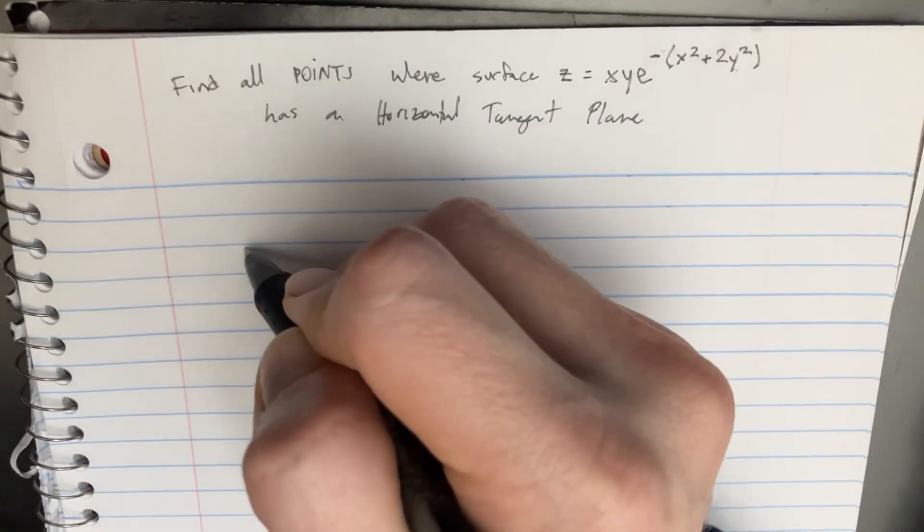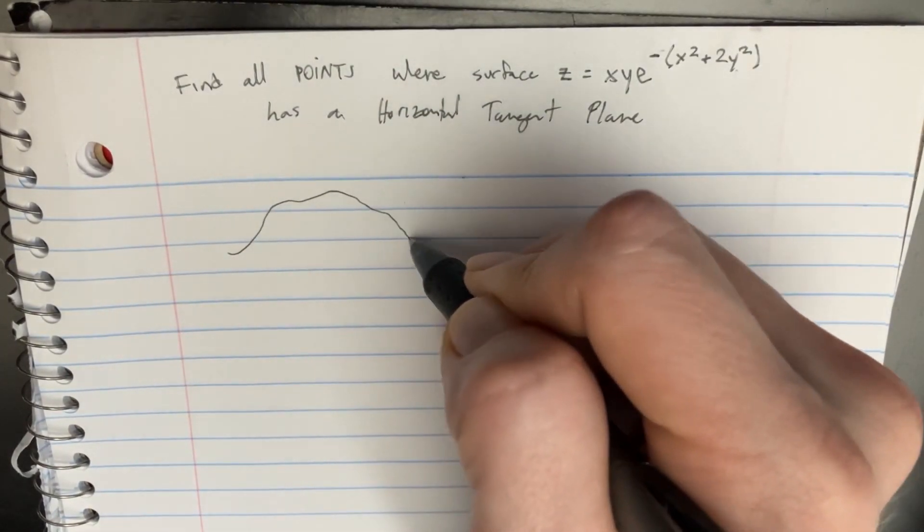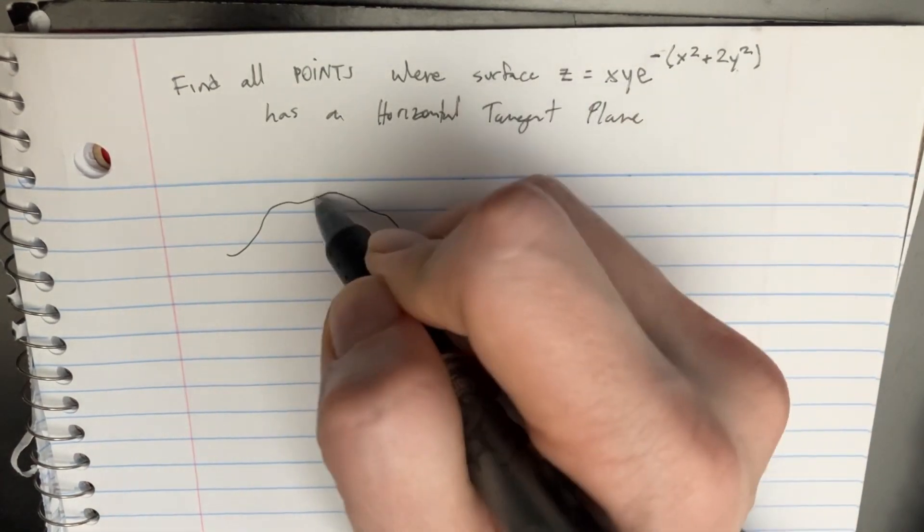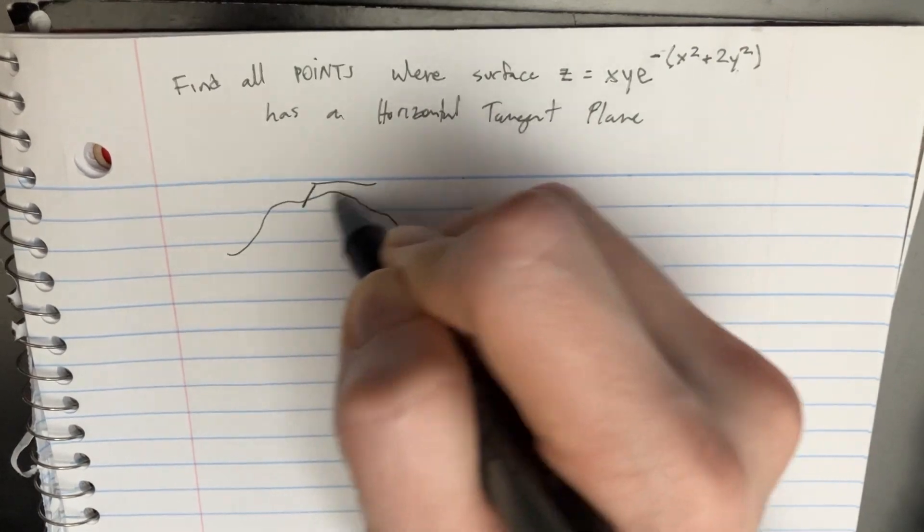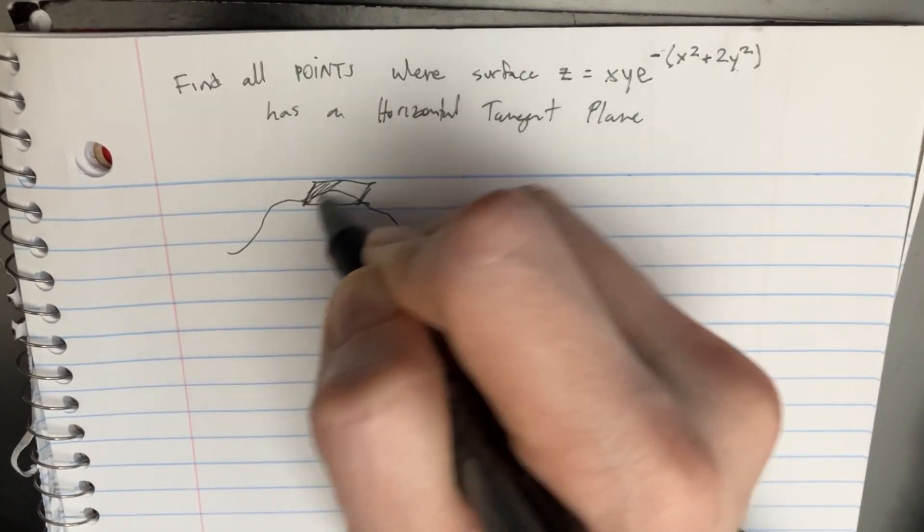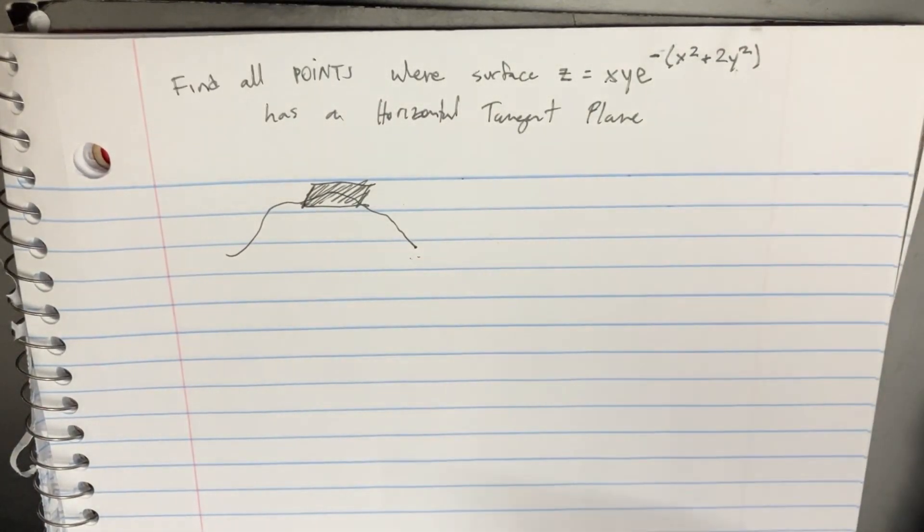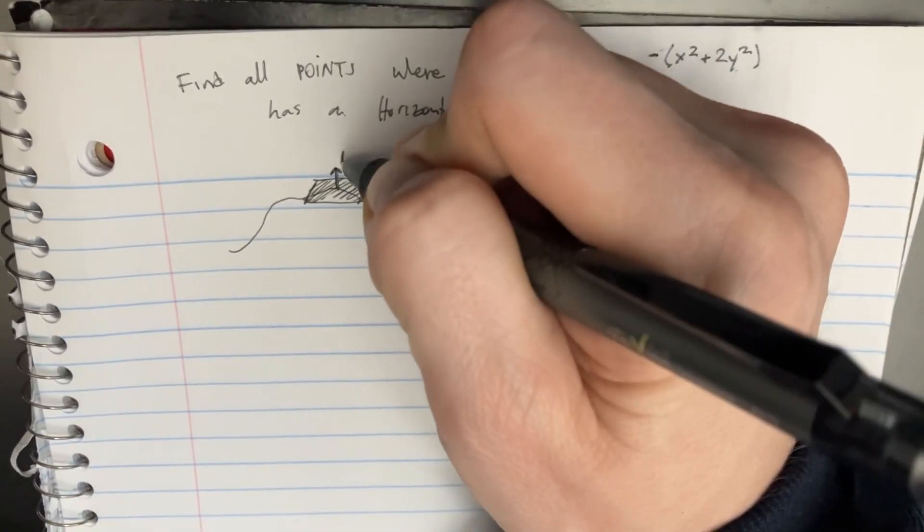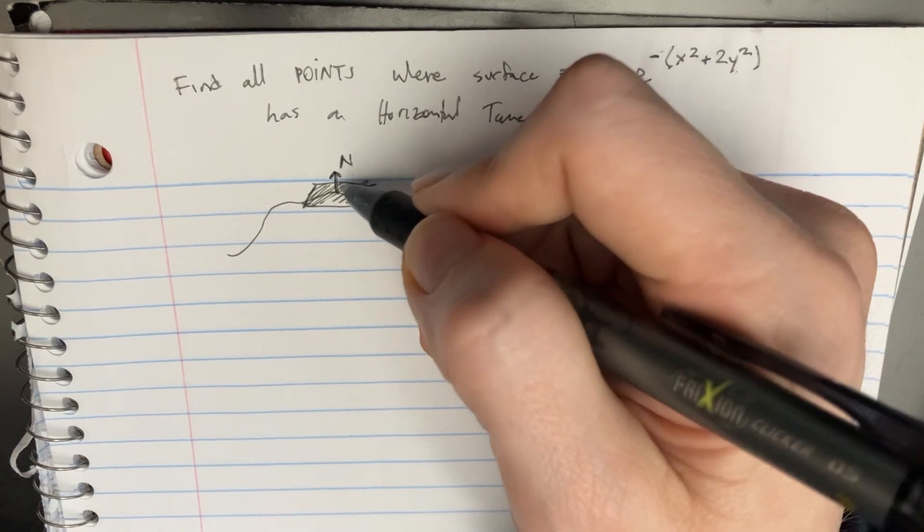So essentially, let's try to draw this a little bit. I've got this little line here, let's call that z. And I want to know if we have this horizontal tangent plane, it's kind of like this. And in order for us to get that, we need a normal like this, perpendicular to the plane.